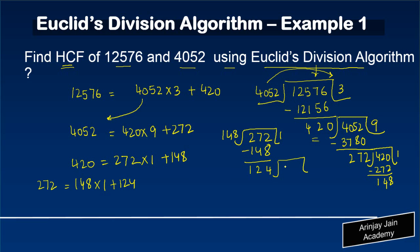Now I divide 148 by 124. It goes one time with a remainder of 24. So we write: 148 = 124 × 1 + 24.